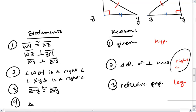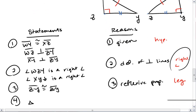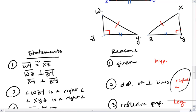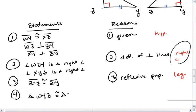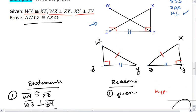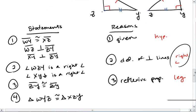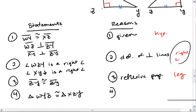That gives me the leg. Since I have all three necessary components, I can now say that triangle WYZ is congruent to triangle XZY. That is by the hypotenuse leg theorem, or you can abbreviate theorem as THM. That's the end of our proof.